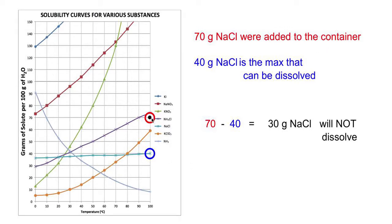We find 70 grams of NaCl added to 100 grams of water, and we have the right temperature, 100 degrees.